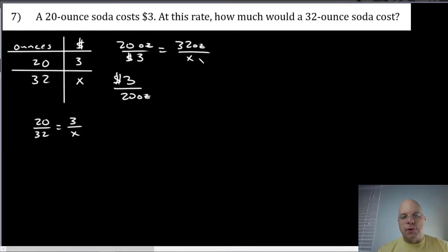If I set it up this way, dollars per ounce—three dollars for 20 ounces would equal x number of dollars per 32 ounces. I have dollars in my numerator, ounces in my denominator. Notice here I have ounces in my numerator and denominator and dollars in my numerator and denominator.